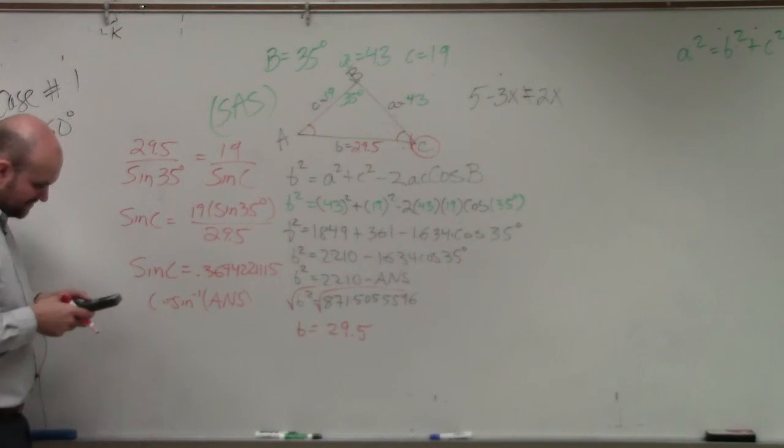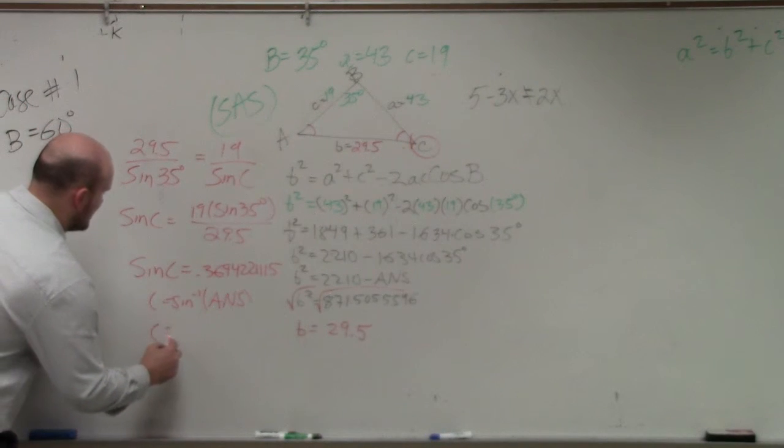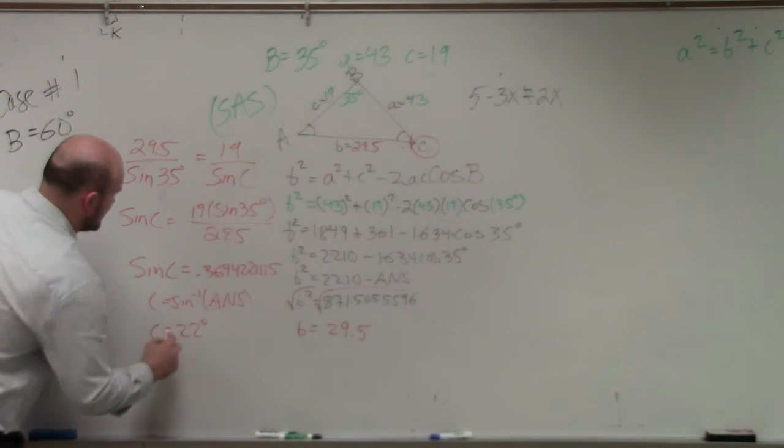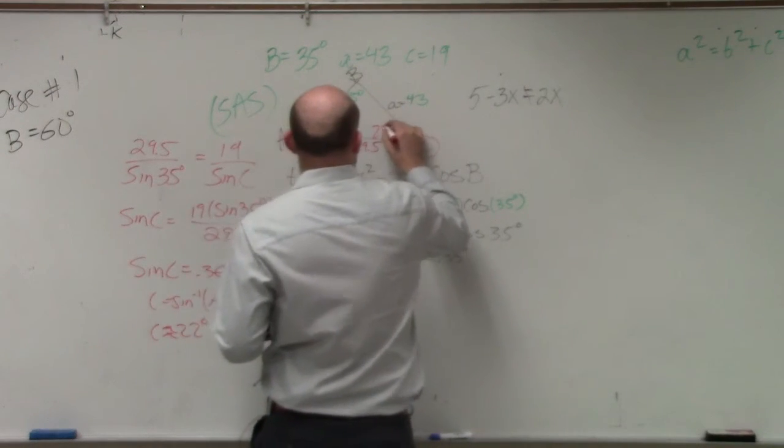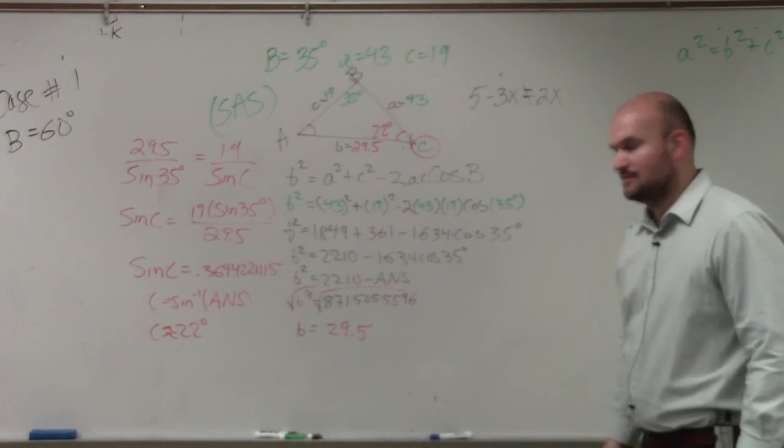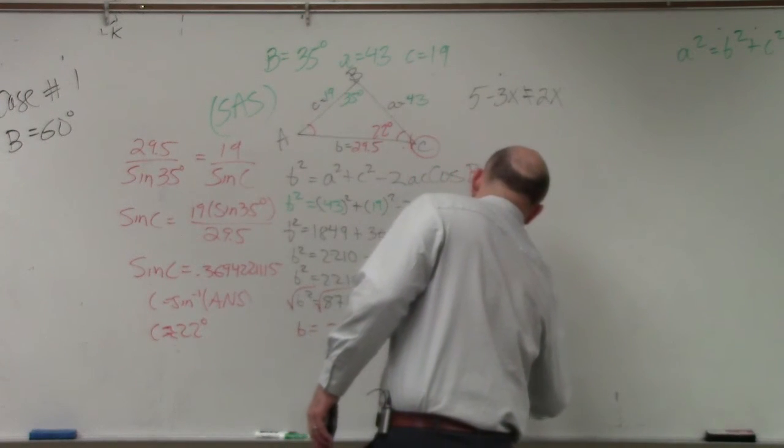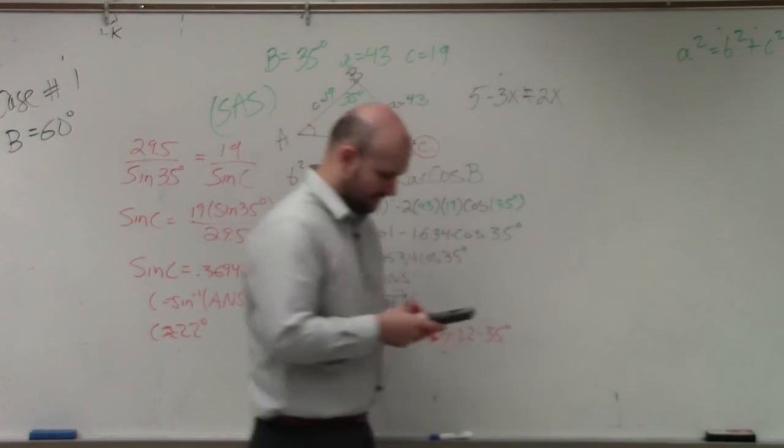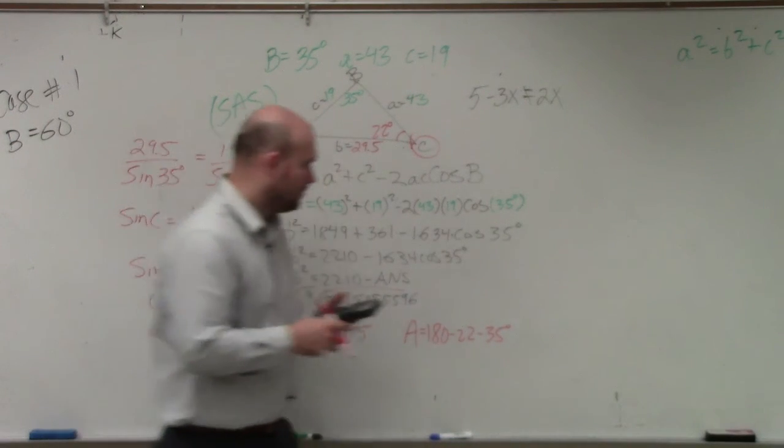So I do sine inverse of that answer and I get 21.6. So C equals 22 degrees. I'll round to the whole number. So if I know what B is, I know what C is, can I figure out what A is? Right. So A is going to equal 180 minus 22 minus 35. 123.